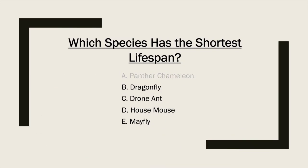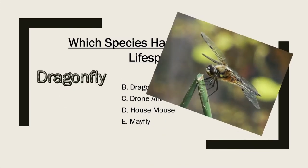Up next, we have the dragonfly — an absolute summer favorite. There are 5,000 different species of dragonflies in the world, and the maximum lifespan of a dragonfly is only about four months. But most won't even live that long because it takes a while after leaving the larva stage to be able to fly — they're quickly eaten by spiders, birds, lizards, and frogs. Not the shortest lifespan, but close.